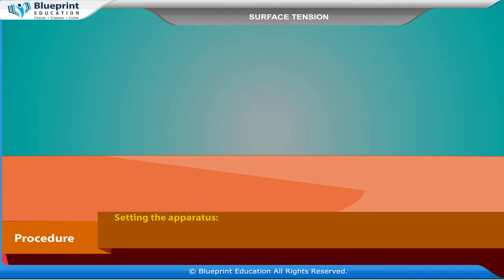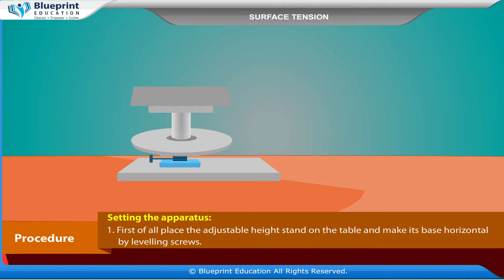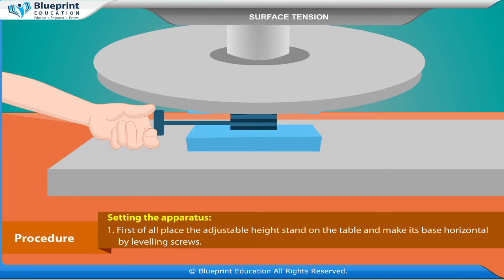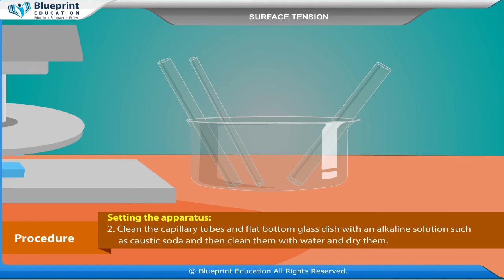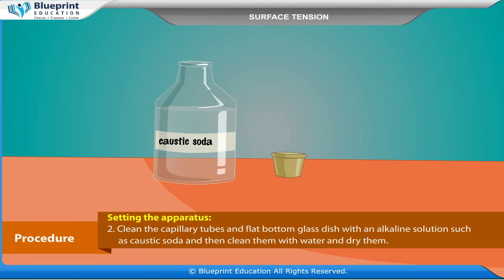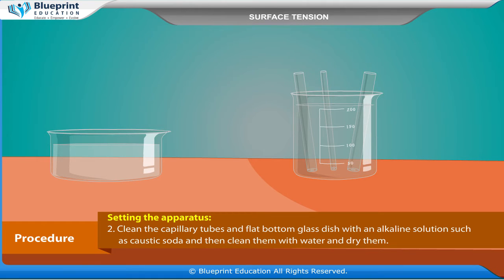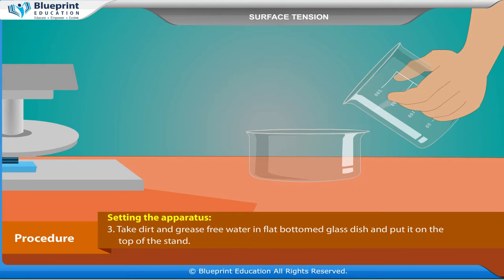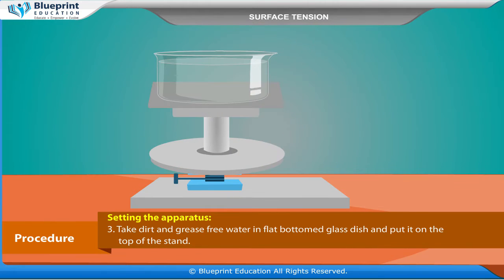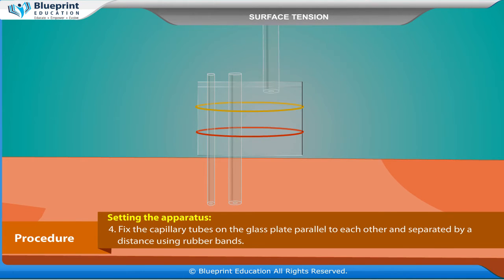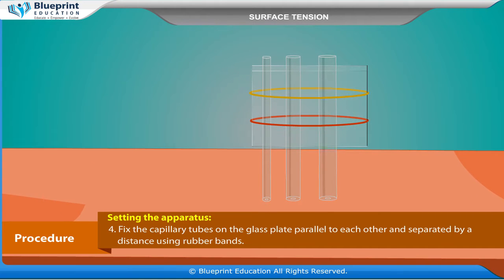Procedure — Setting the apparatus: First of all, place the adjustable height stand on the table and make its base horizontal by levelling screws. Clean the capillary tubes and flat bottom glass dish with an alkaline solution such as caustic soda, then clean them with water and dry them. Take dirt and grease free water in the flat bottomed glass dish and put it on top of the stand. Fix the capillary tubes on the glass plate parallel to each other, separated by a distance using rubber bands.